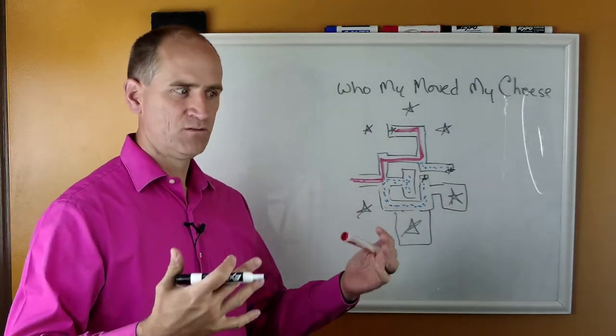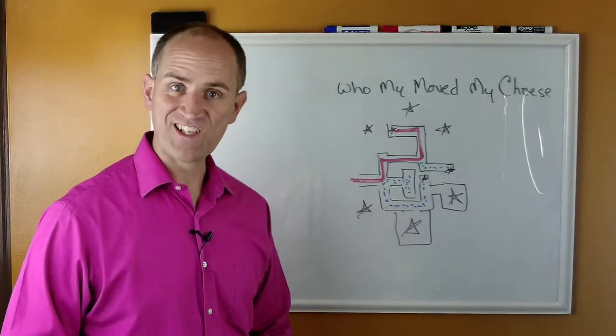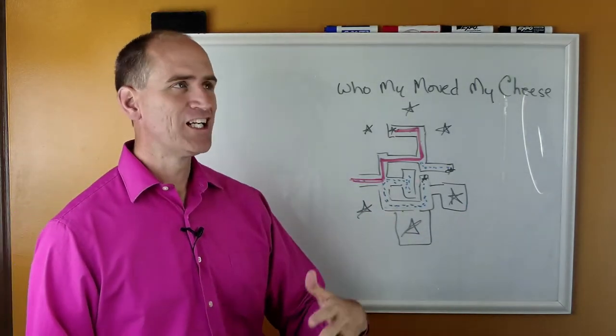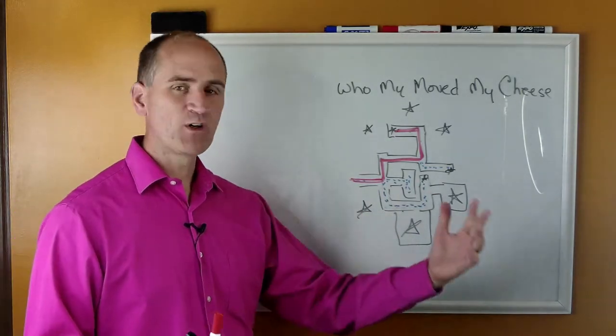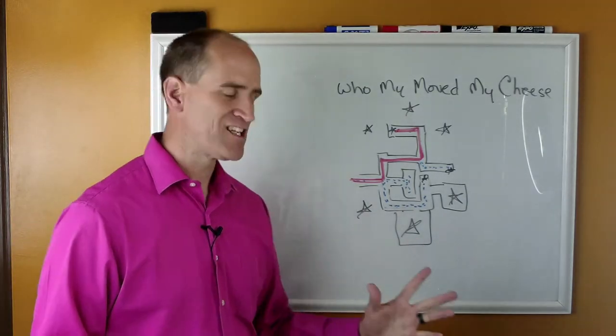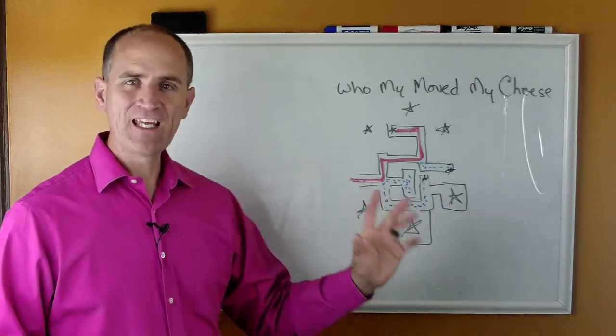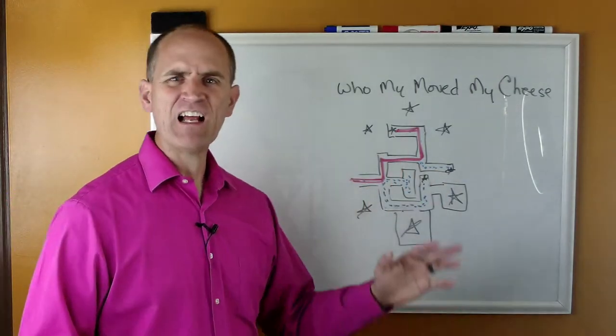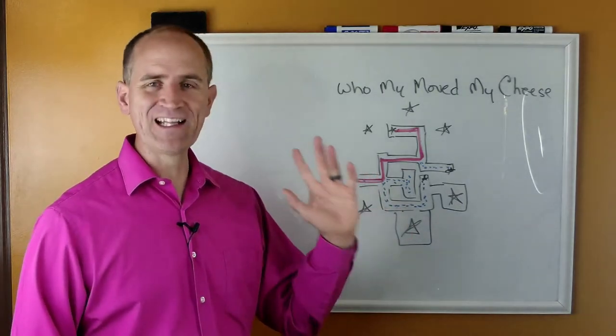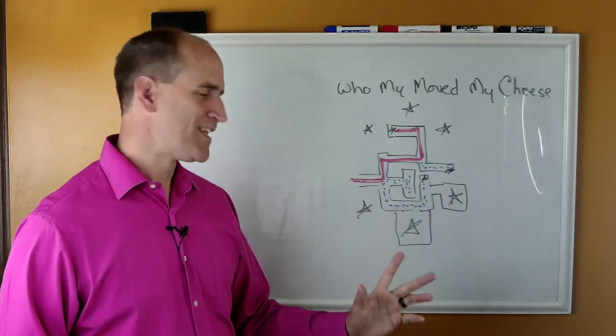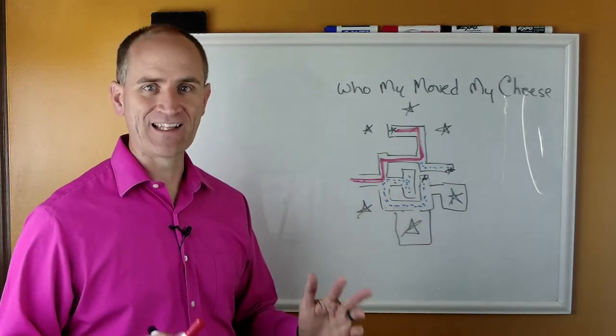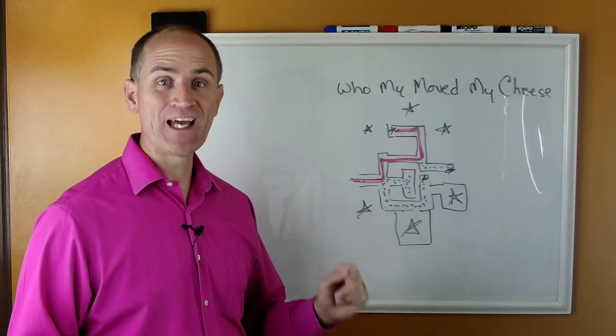We start discovering, oh wow, there's some cheese over here, there's some cheese over here. We can start seeing that there are new kinds of cheese. Sticking with the analogy here, there's provolone, there's pepper jack, there's cheddar, there's mozzarella, there's all these different kinds of cheese, feta. And you're going to go to some and you're like, ah, that was yucky, I don't want to eat that again. And then you'll go to some and it's like, oh, I really like that, and you want to keep going back and doing that again and again.